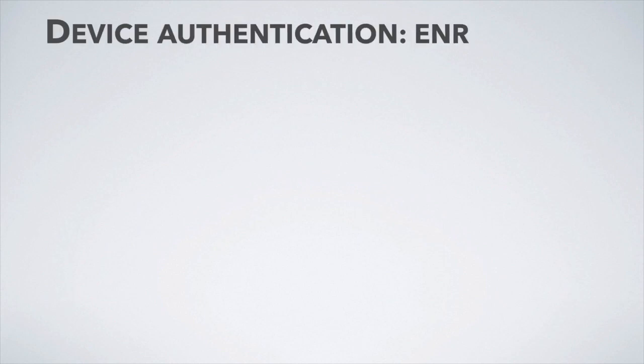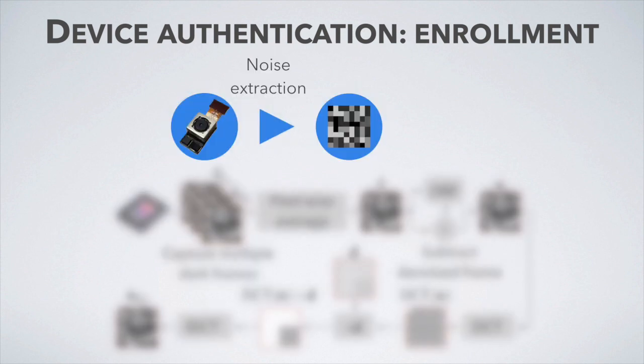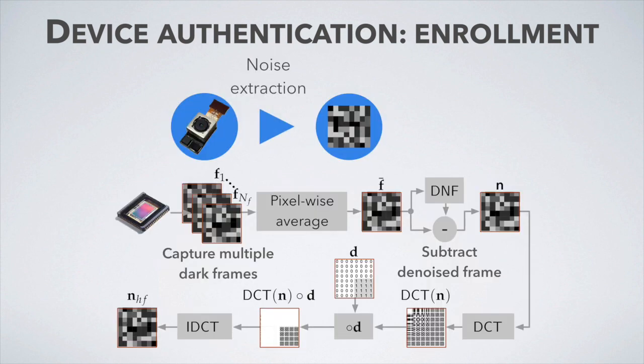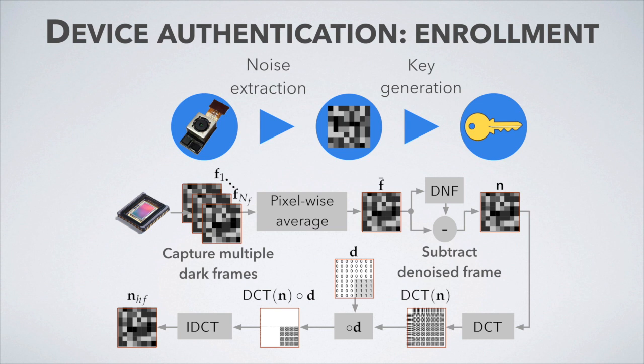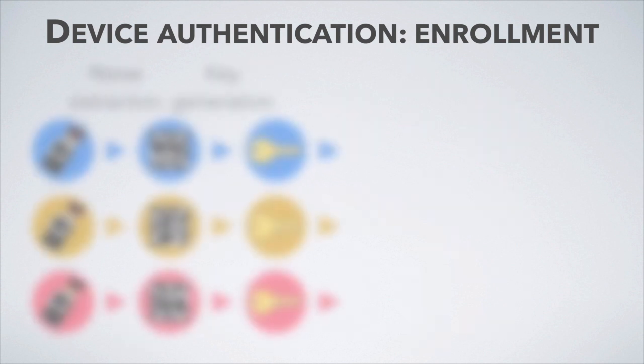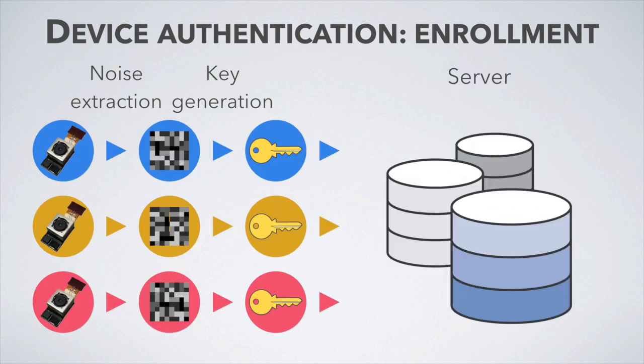The device authentication process consists of an enrollment phase and an authentication phase. The enrollment phase consists of noise extraction and key generation. Noise extraction involves removing temporal noise and extracting high-frequency components, while key generation selects the most prominent noise component. Afterwards, generated reference keys are registered to the application server before any authentication takes place.